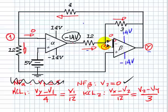And KCL2 is, instead of Vx, now this is minus 14. So let me erase this. Instead of this one, it's minus 14 minus V2 over 12.